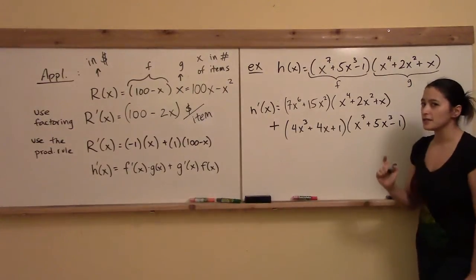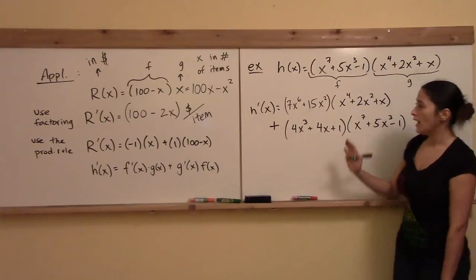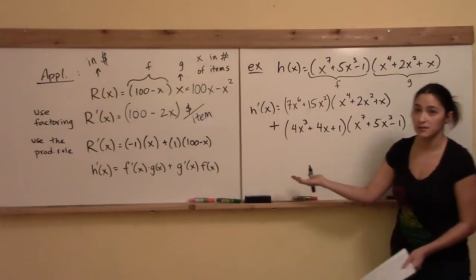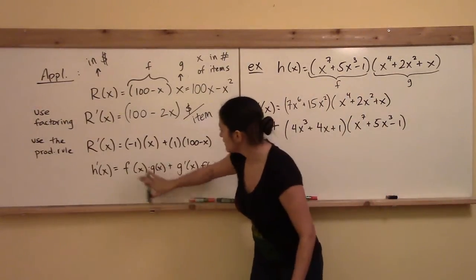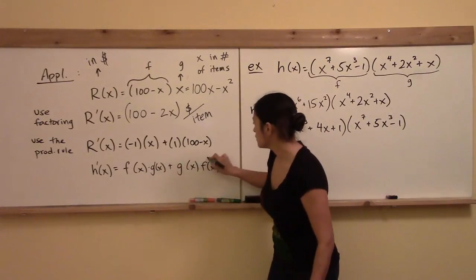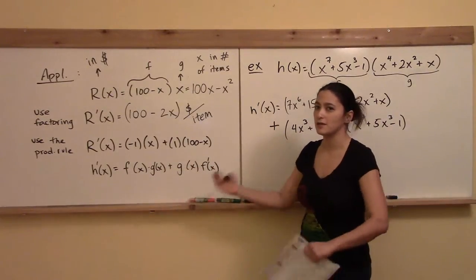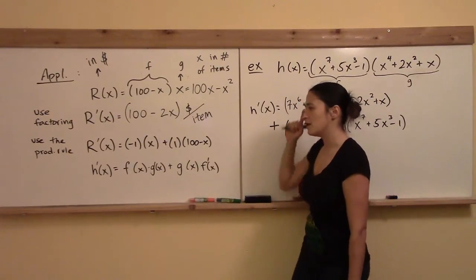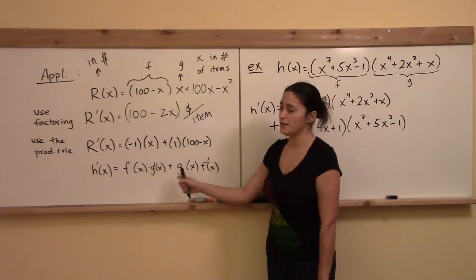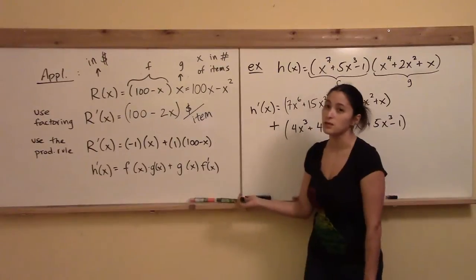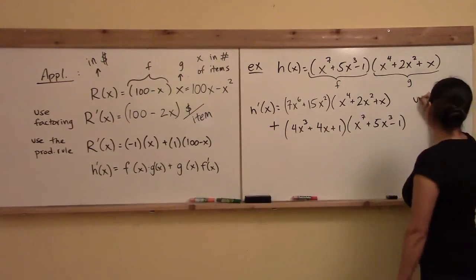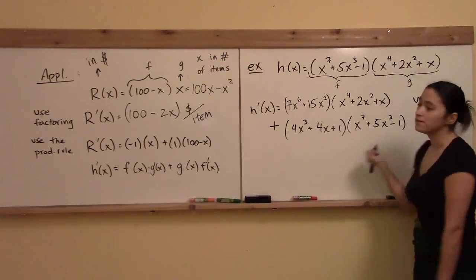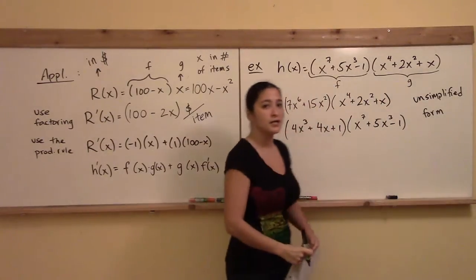Notice I am not taking the derivative of both functions at the same time. I do one and leave the other alone, then add — do the other and leave that one alone. It doesn't even have to be in this order, since addition is commutative. What matters is: take the derivative of one, leave the other alone, then add the derivative of the other and leave the first one alone. That is the unsimplified form of h prime.